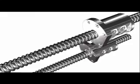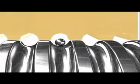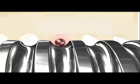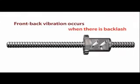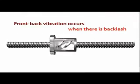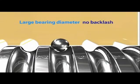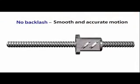Similarly, in the case of a ball screw, when the bearings are relatively small, backlash exists and the nut will tend to vibrate back and forth as it performs its reciprocating motion. In contrast, when the bearings have a relatively large diameter, there will not be any backlash and preload will exist. In this case, there will be no vibration.